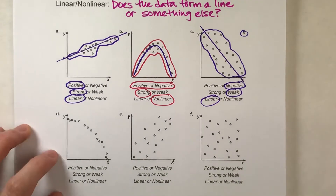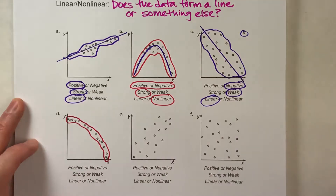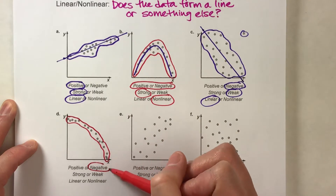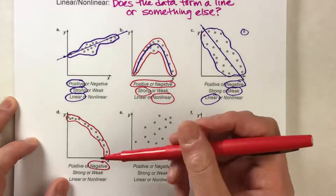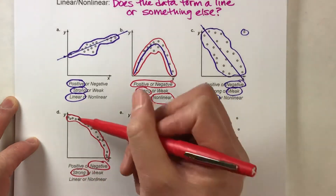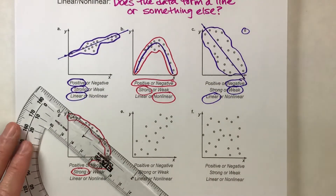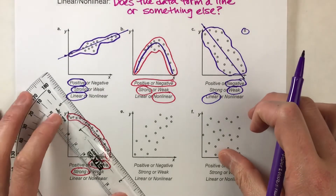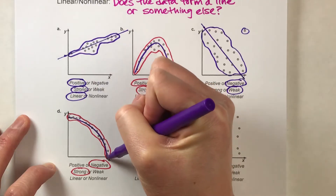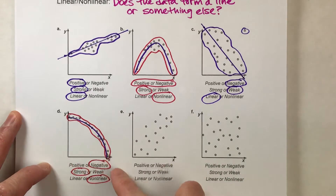This next one is interesting. If I outline the data, you can see it's kind of going down to the right in a little arc. So we know it's going down, making it a negative association. Is it strong or weak? It pretty tightly follows that pattern — even tighter than the last one — so this is a pretty strong association. And for linear or nonlinear, if I use my straight edge, you can't really draw a line through this. It's closer to an arc going down, so I would say this is nonlinear because it's a curve, not a straight line.